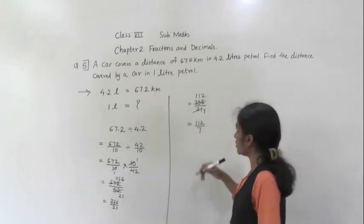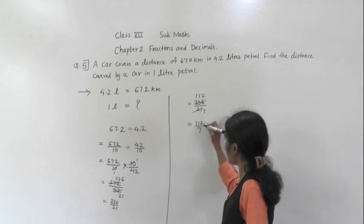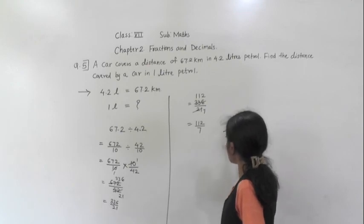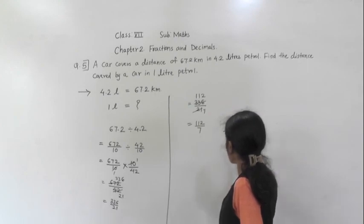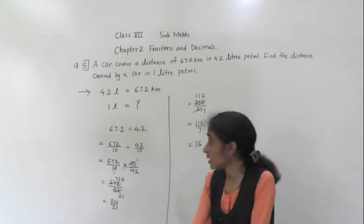Or it can be done by direct division by 21. Now divide 112 by 7. Here 2 divisions: 112 divided by 7. 7 ones are 7. 11 minus 7 is 4. 4 sevens are 42 — wait, 7 sixes are 42. So what we got for the answer? 16.